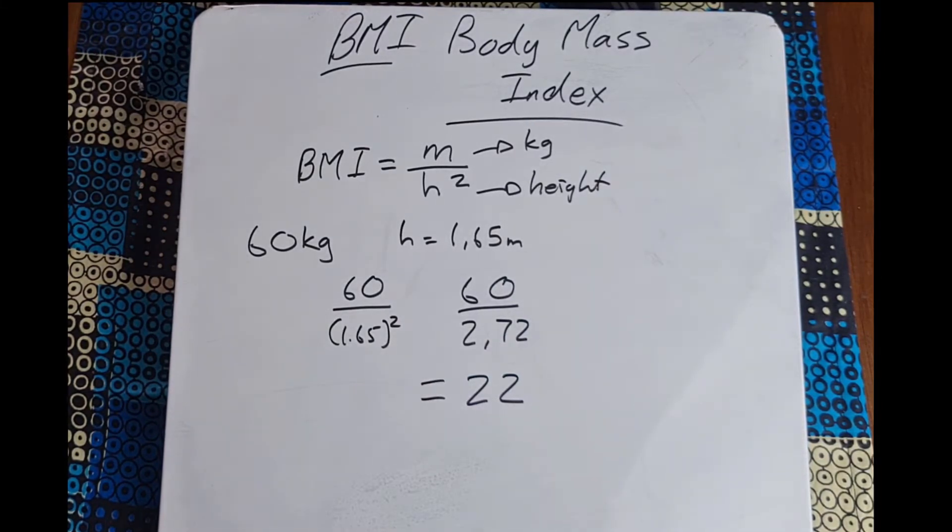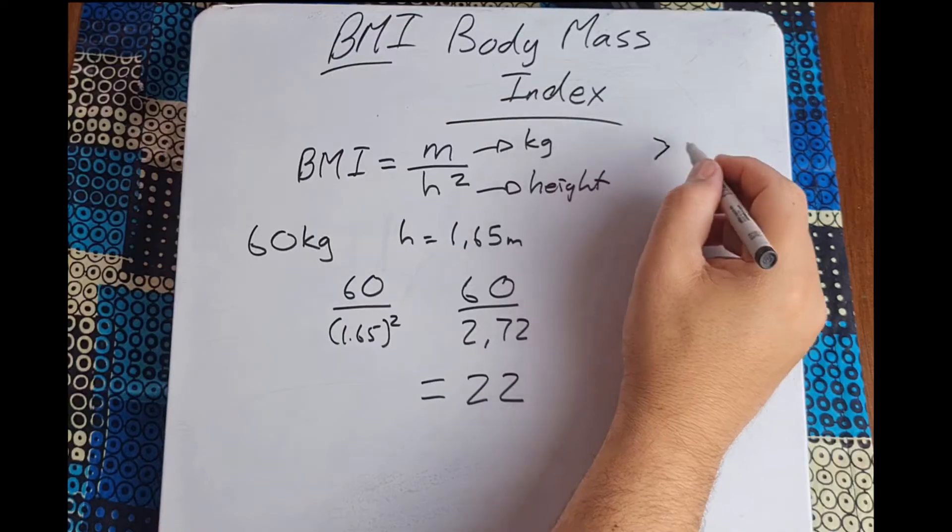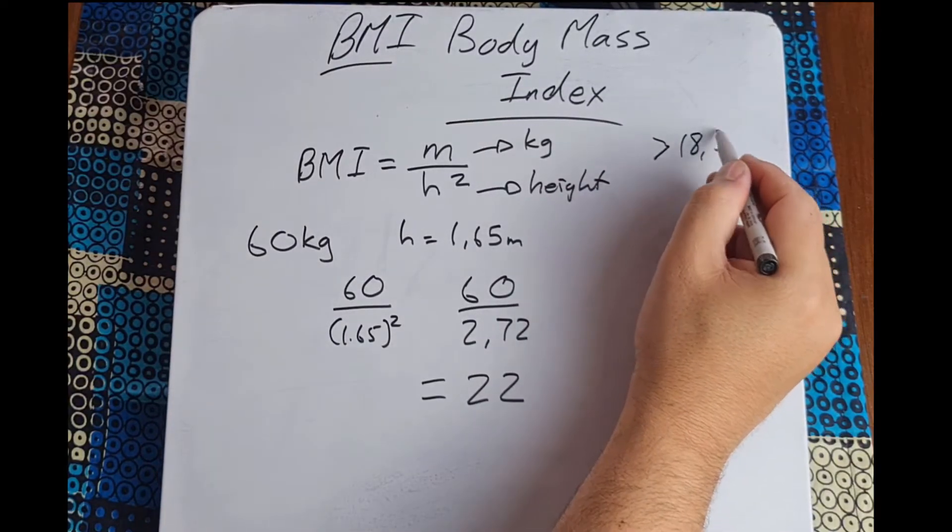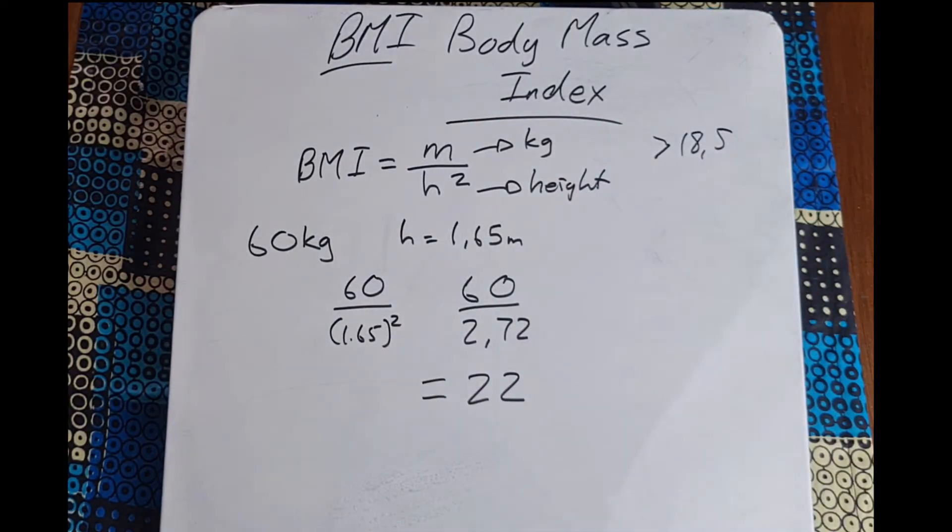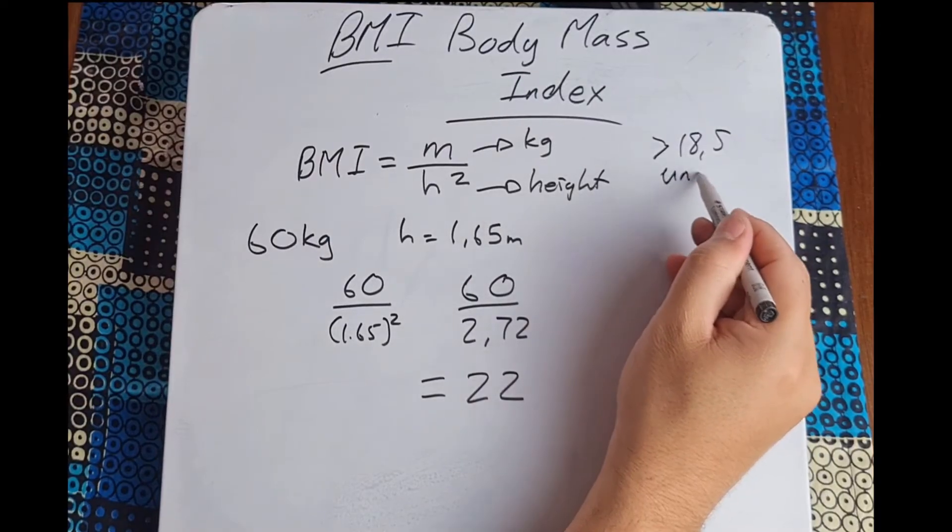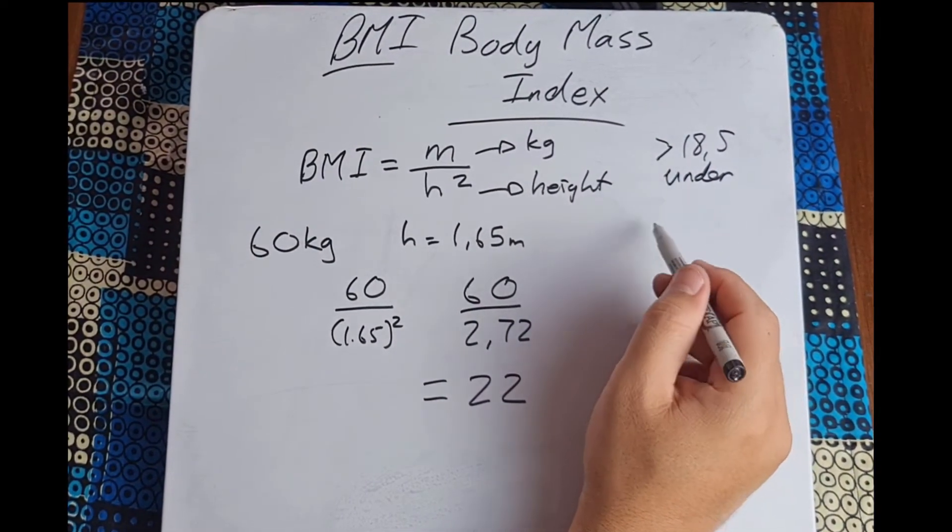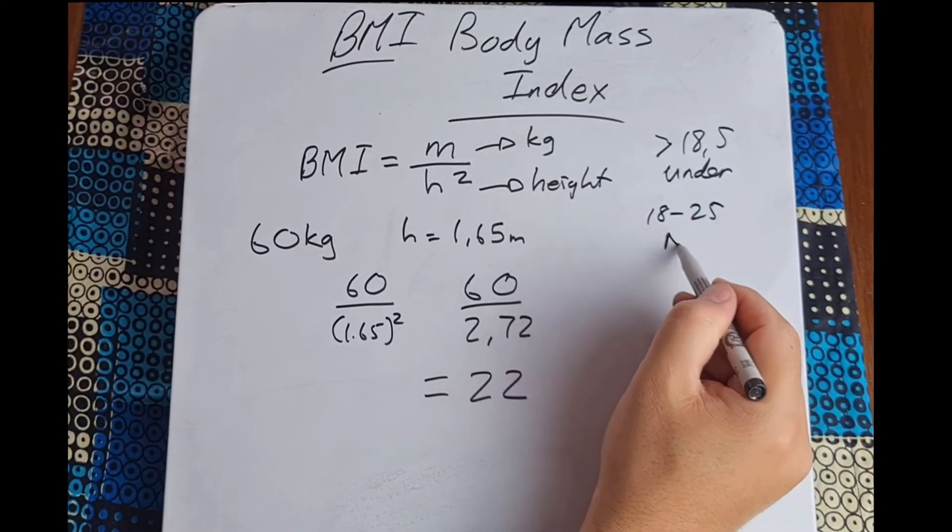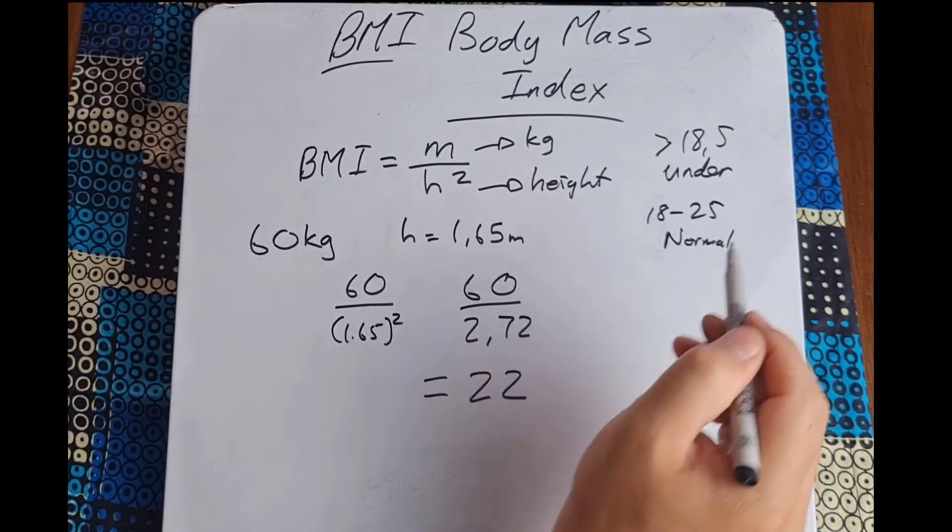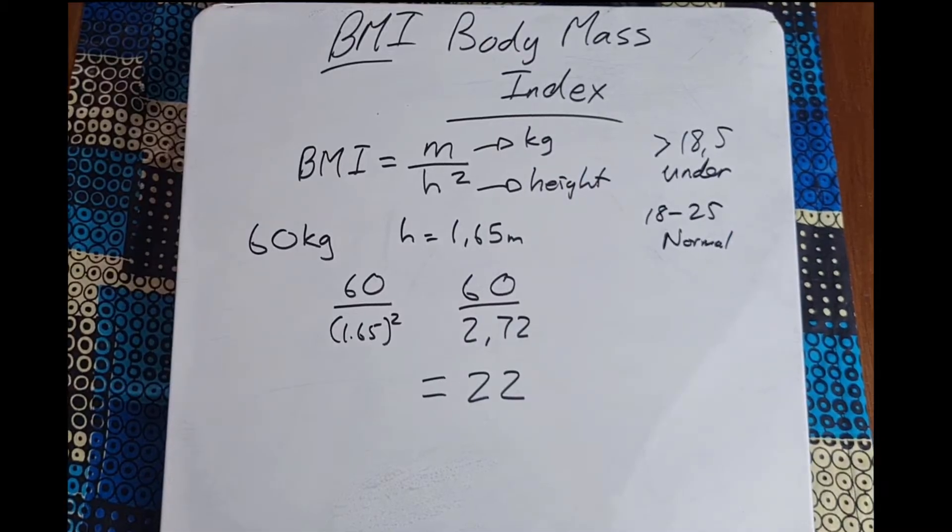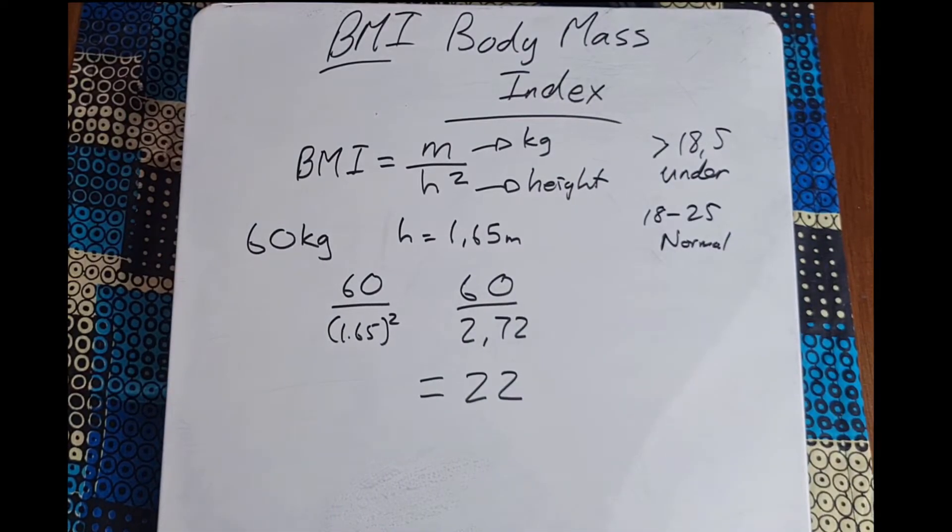So what does that now actually mean? Well according to the body mass index, if you score over 18.5 then you are underweight. If you score between 18 and 25 you are what they consider normal weight. Anything above 25 is considered overweight and over 30 is obese.